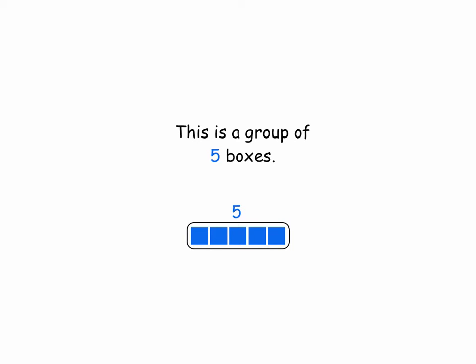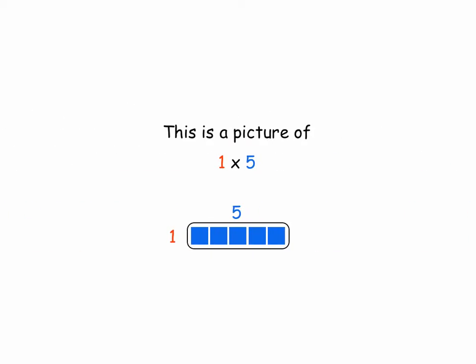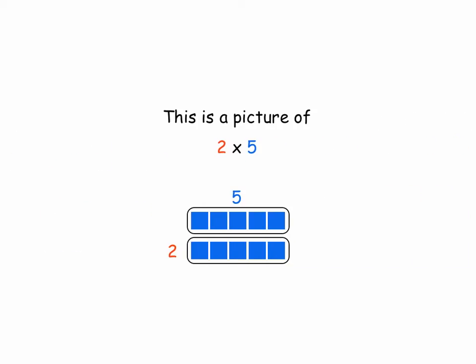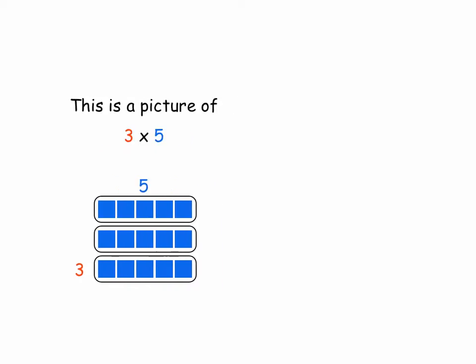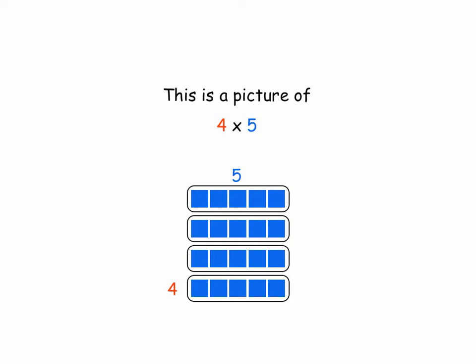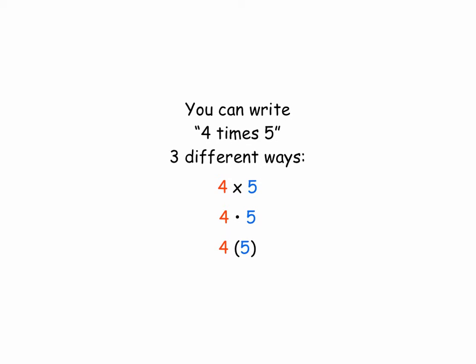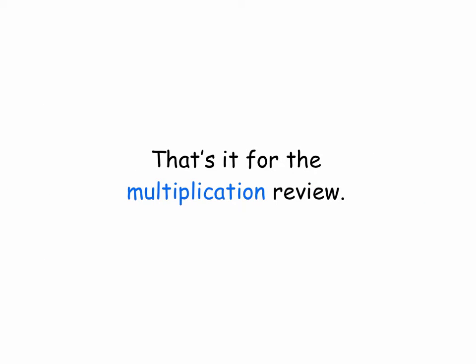This is a group of five boxes — one group of five boxes. This is a picture of one times five. This is a picture of two times five. This is a picture of three times five. A picture of four times five. You can write four times five three different ways: four times five, four times five with a dot, four times five with parentheses. That's it for the multiplication review.